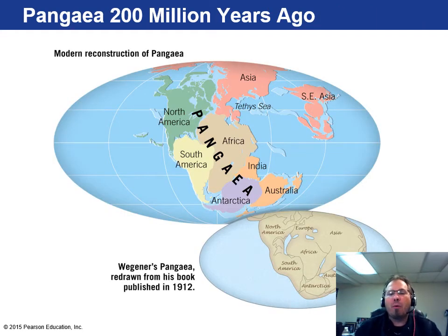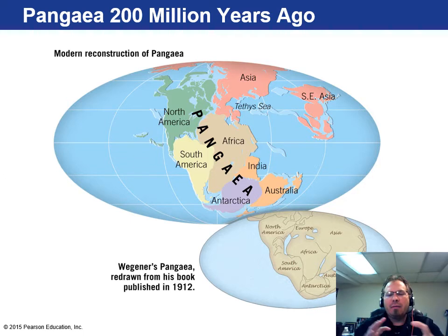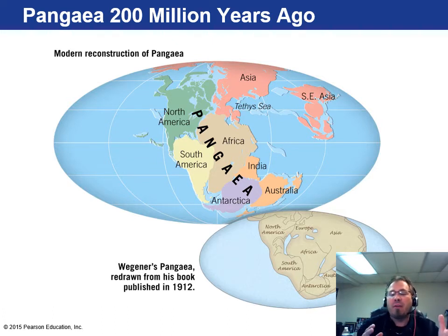200 million years ago, there was one large supercontinent called Pangaea. North America, South America, Africa, Asia — they were all connected in some form or fashion. This is the way he had envisioned it all the way back in 1912, and that over time the continents drifted into their present positions. There were some flaws in this, and being so far out there as an idea, he wasn't quite able to explain everything.